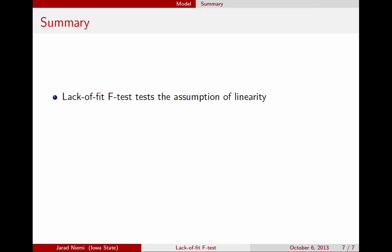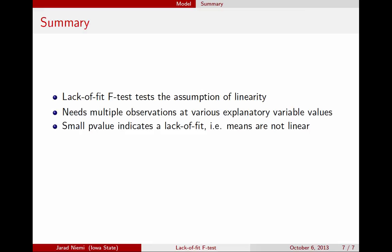So in summary, the lack-of-fit F-test in regression tests this assumption of linearity in the model. It does need multiple observations at at least some of the explanatory variable values in order to run the test at all. The small p-value will indicate a lack of fit, that is, that the means of these groupings do not appear to be linear. But this doesn't describe what is the right, correct relationship. So it might be that you need to transform your response, you might want to try a log. It might be that you need to transform your explanatory variable values, maybe taking a log, maybe adding an additional term. In particular, adding perhaps a squared term to get a quadratic trend. Or perhaps there are other explanatory variables that are important for modeling the data but have not been included in the analysis. Thank you.